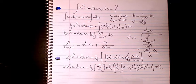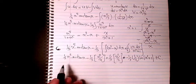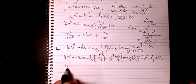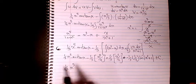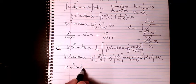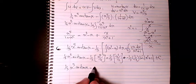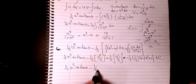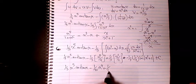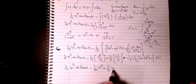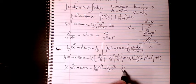Writing the final answer: (1/5) x⁵ arctan(x) minus (1/20) x⁴ plus (1/10) x² minus (1/10) ln(x² + 1) plus C.